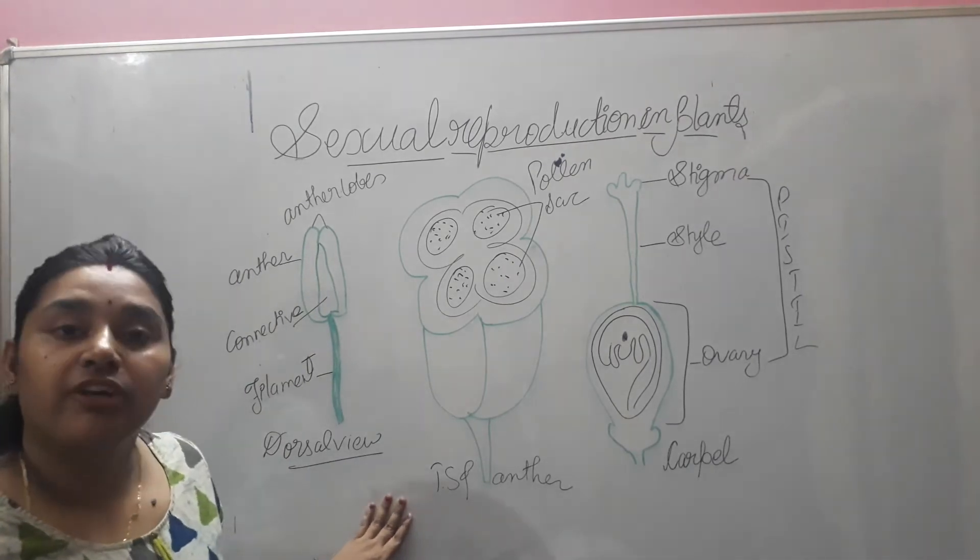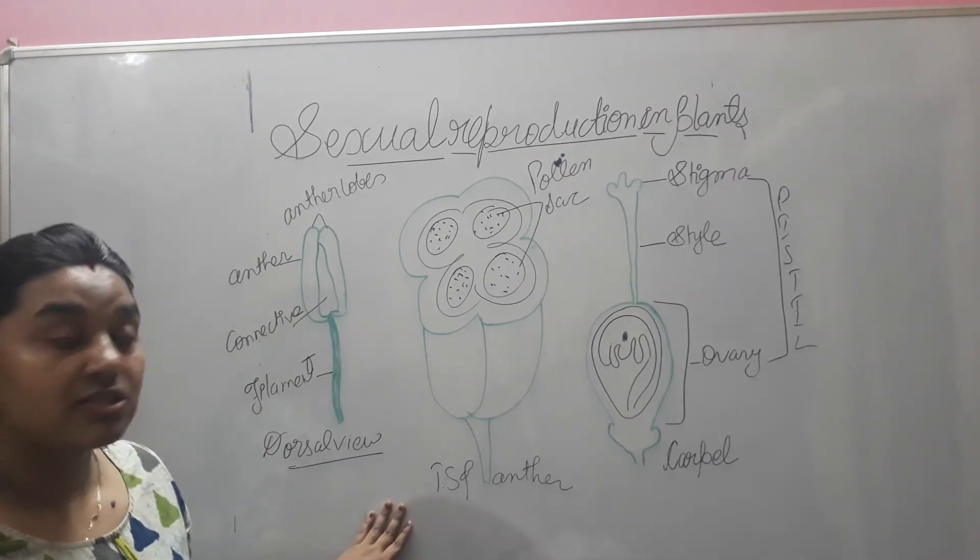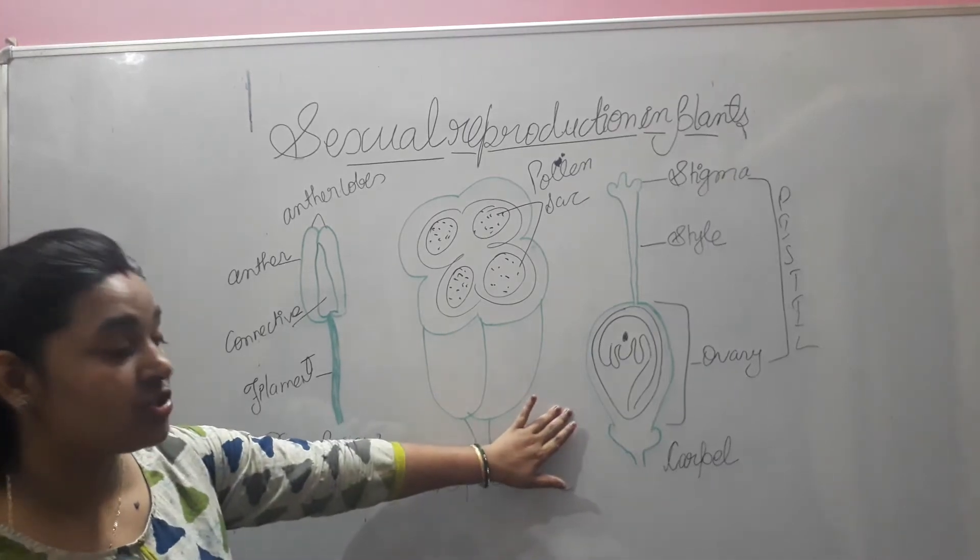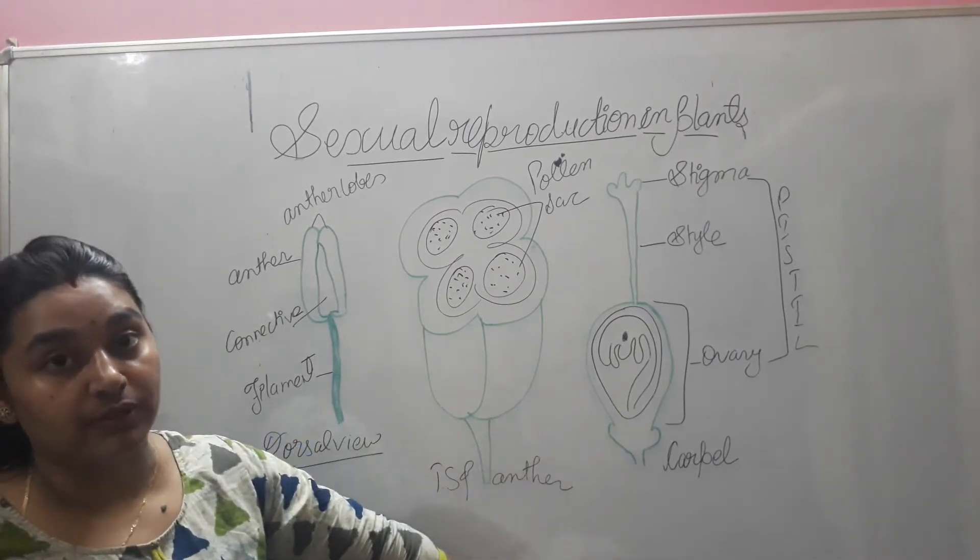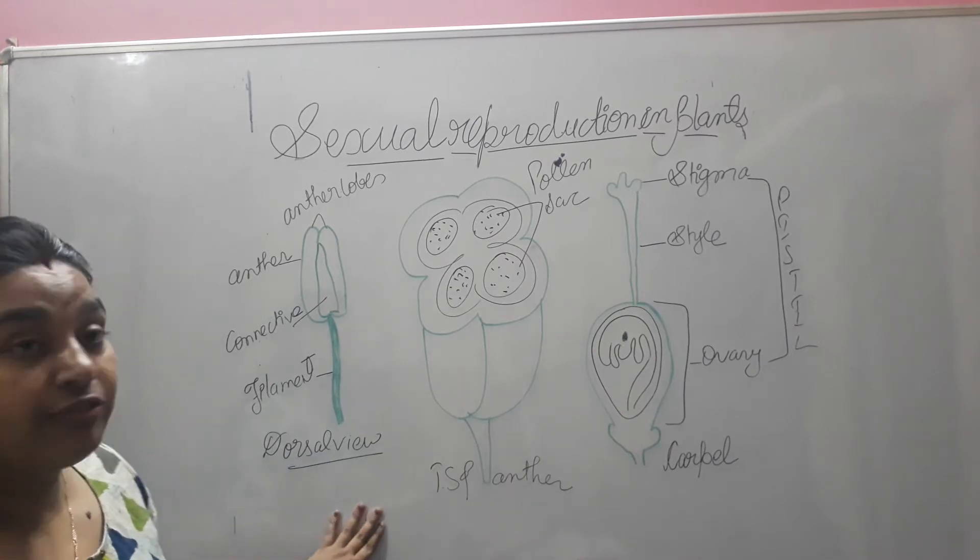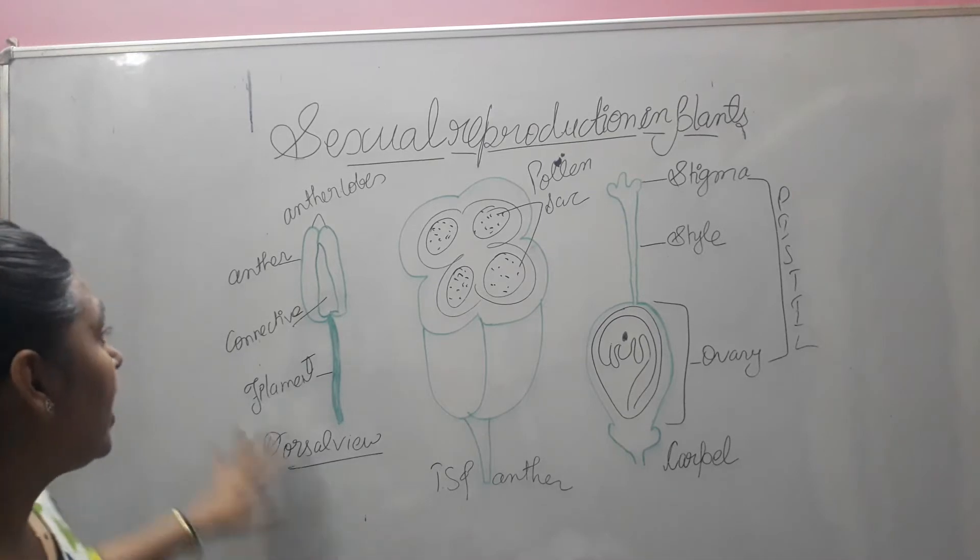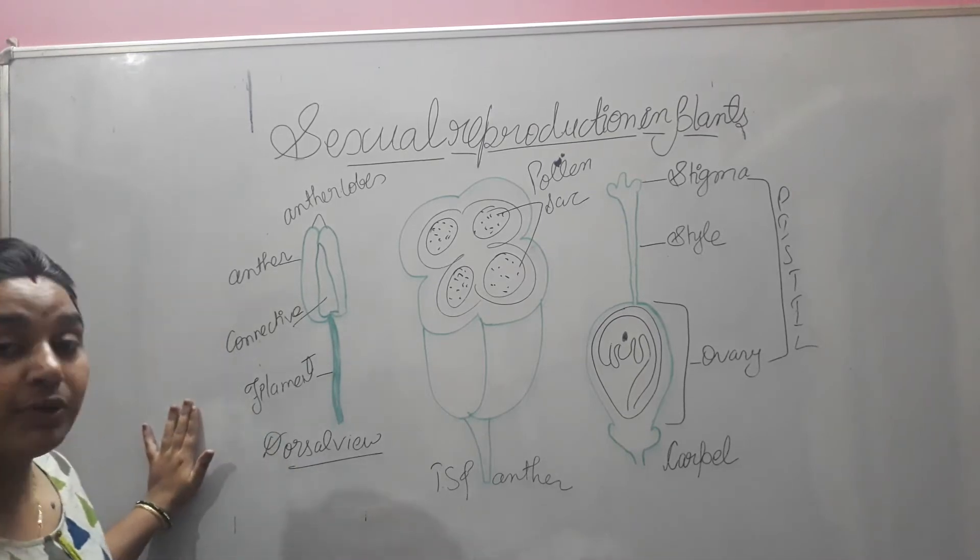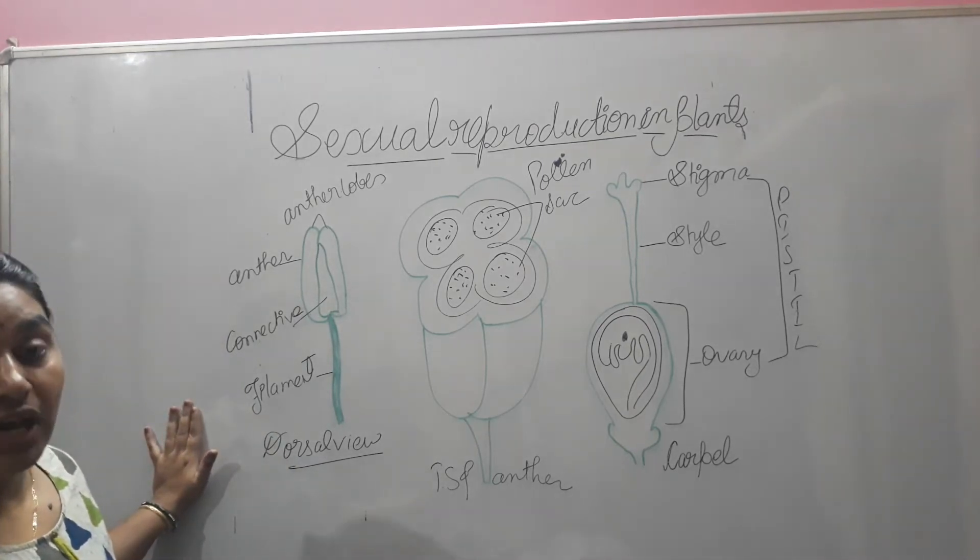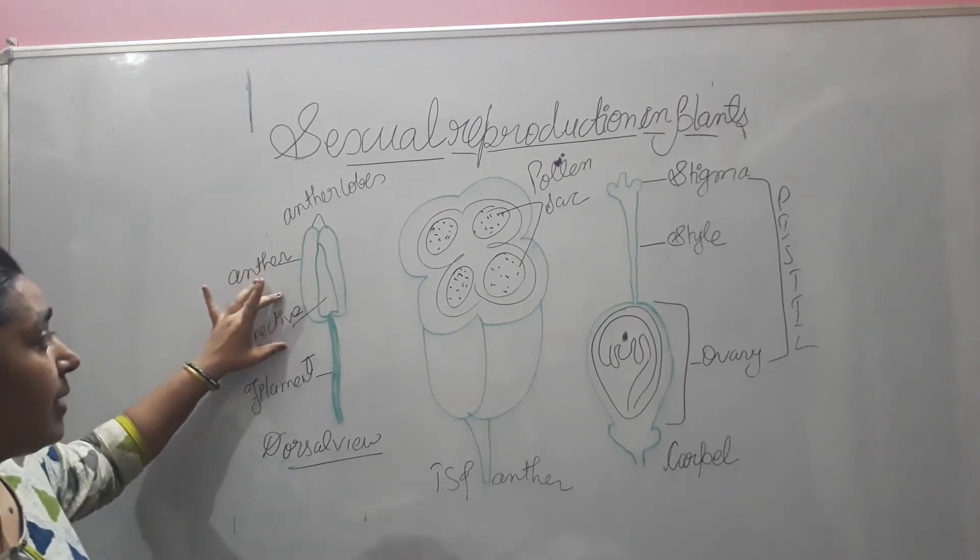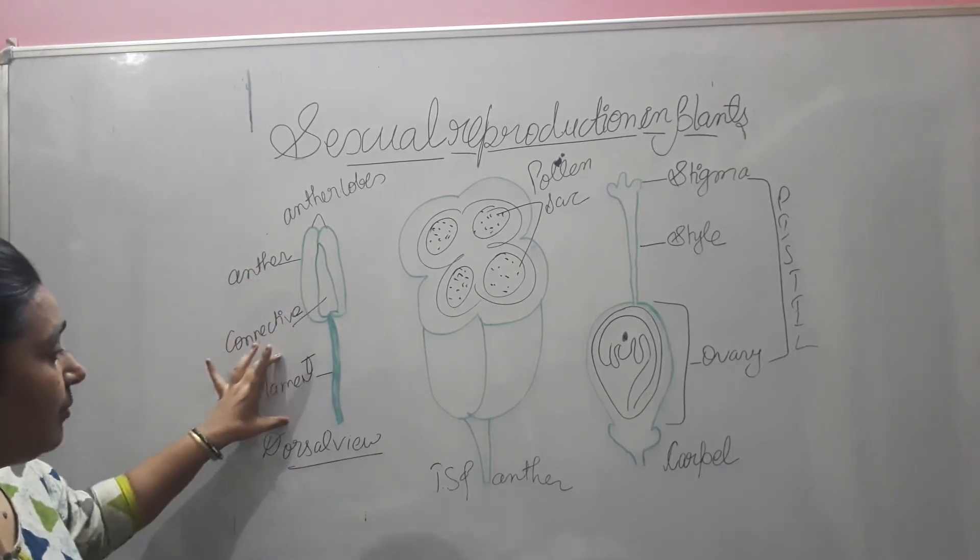The male reproductive part of a flower is called the androecium and the female one is called the gynoecium or carpel. Let us see the first part, androecium, which is the male reproductive part. This is a typical anther structure. I had told you that anther has a bilobed part and a filament.